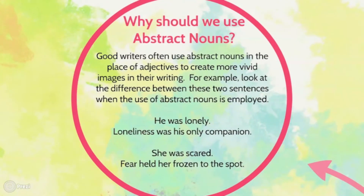So why should we use abstract nouns in our writing? Good writers often use them in the place of adjectives to create more vivid images in their writing, and you may want to do this in any of your creative writing pieces. If you're studying the AQA syllabus, you would use creative writing in your controlled assessments; for the WJEC syllabus, you will have to creative write within the exam. Also, if you're doing a writing to describe task, using abstract nouns makes the picture of what you're describing more vivid and more real.